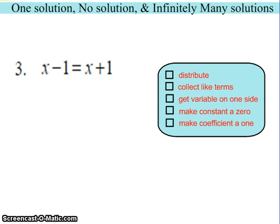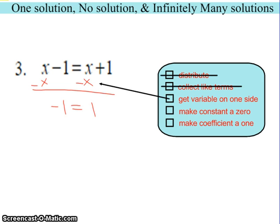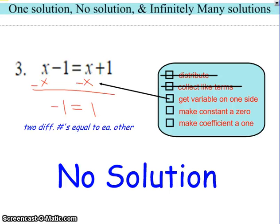Let's look at three examples. In the first one, we start with distributing — which we don't have to do — and we don't have to collect like terms. But we do have to get the variables on the same side, so we subtract x from both sides. When that happens, we get negative 1 equaling 1. That's two different numbers being equal to each other, which is a sign for no solution. No matter what number is plugged in, taking one away from it is very different than adding one to it.